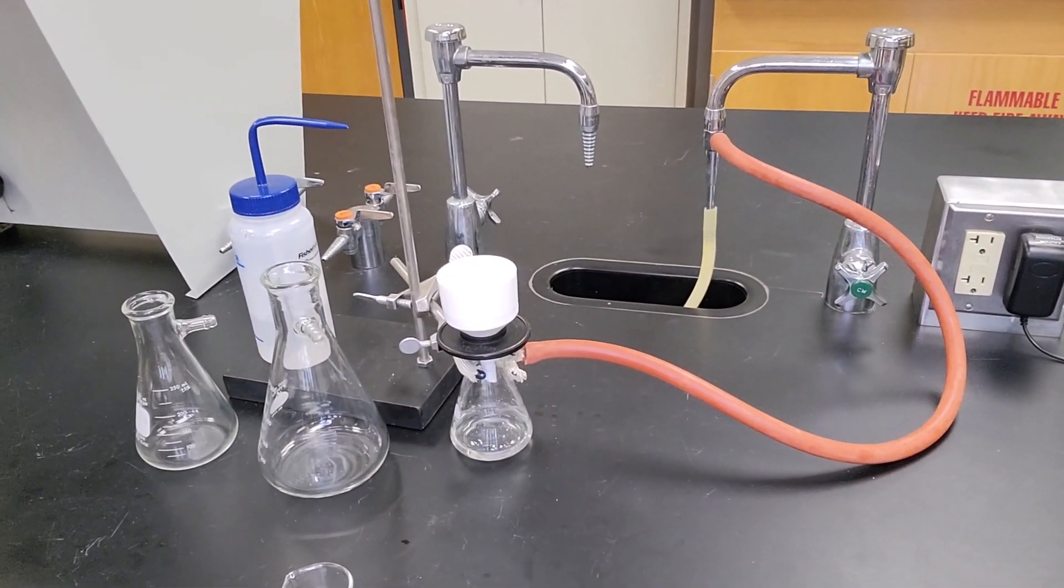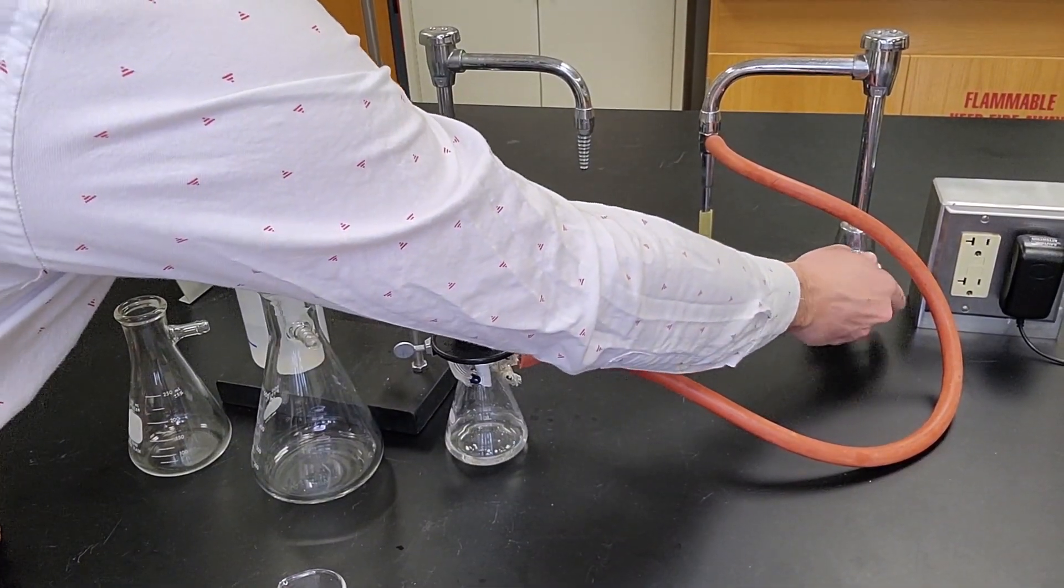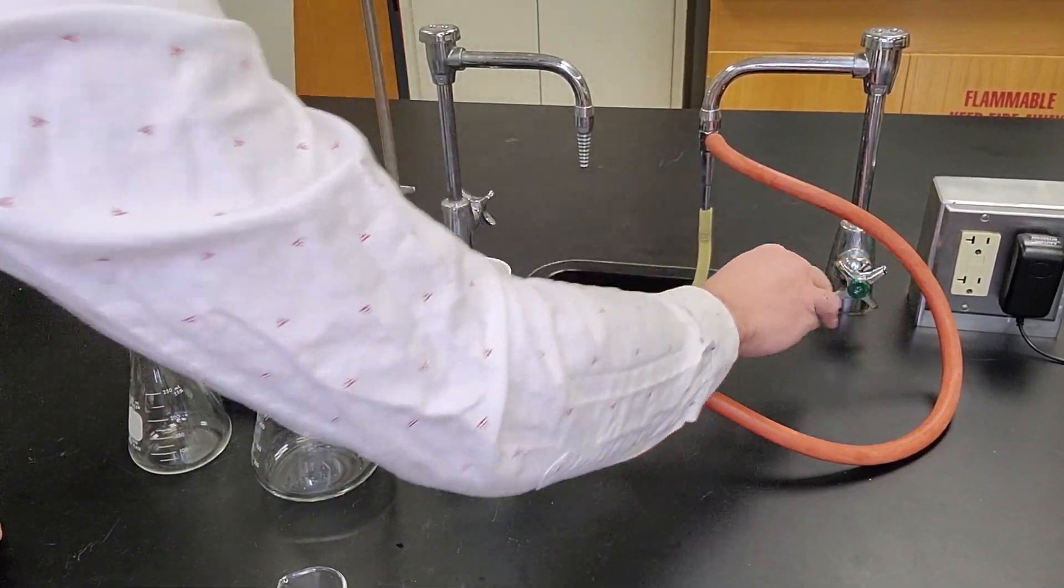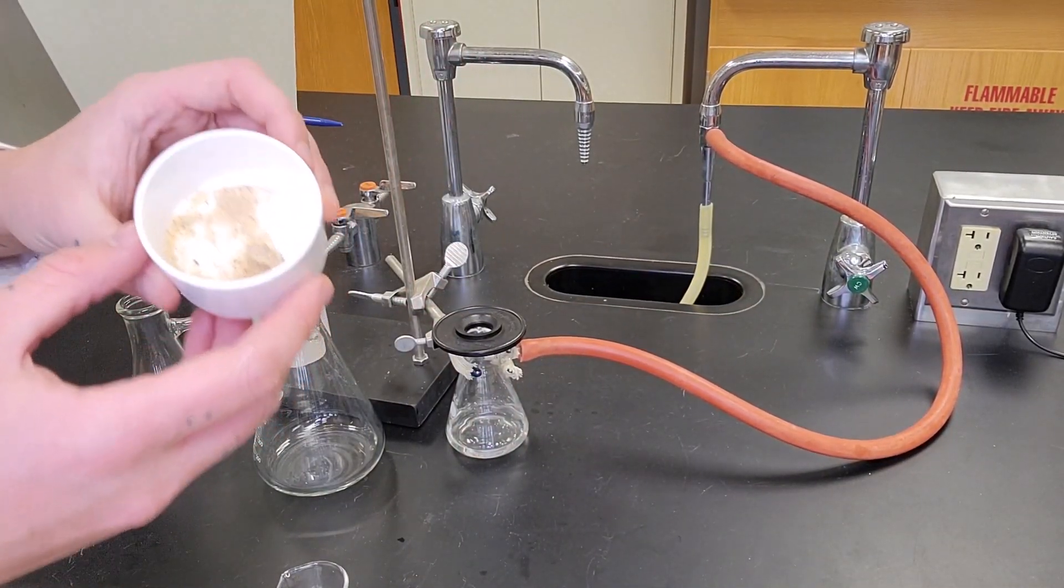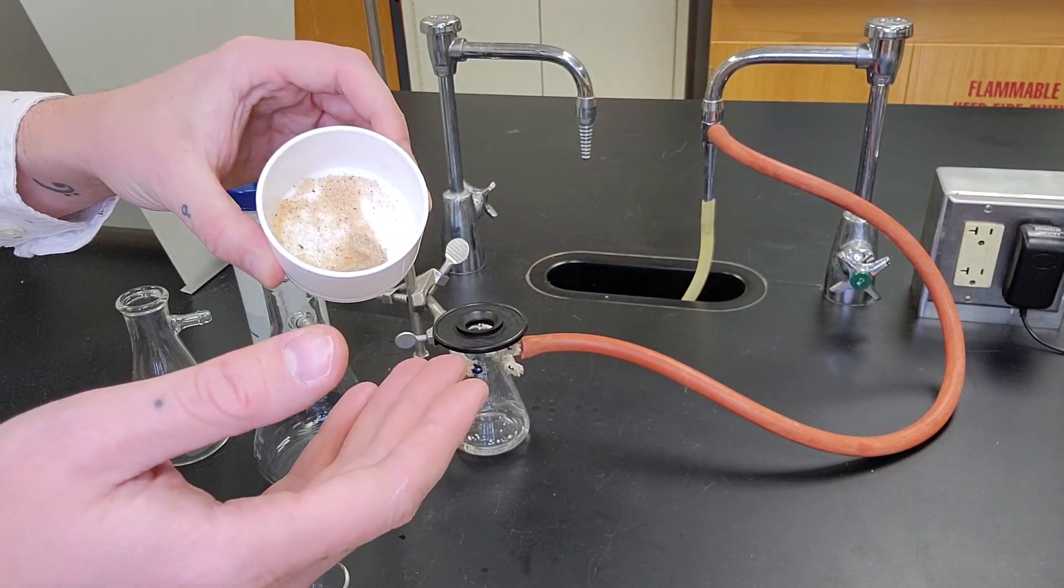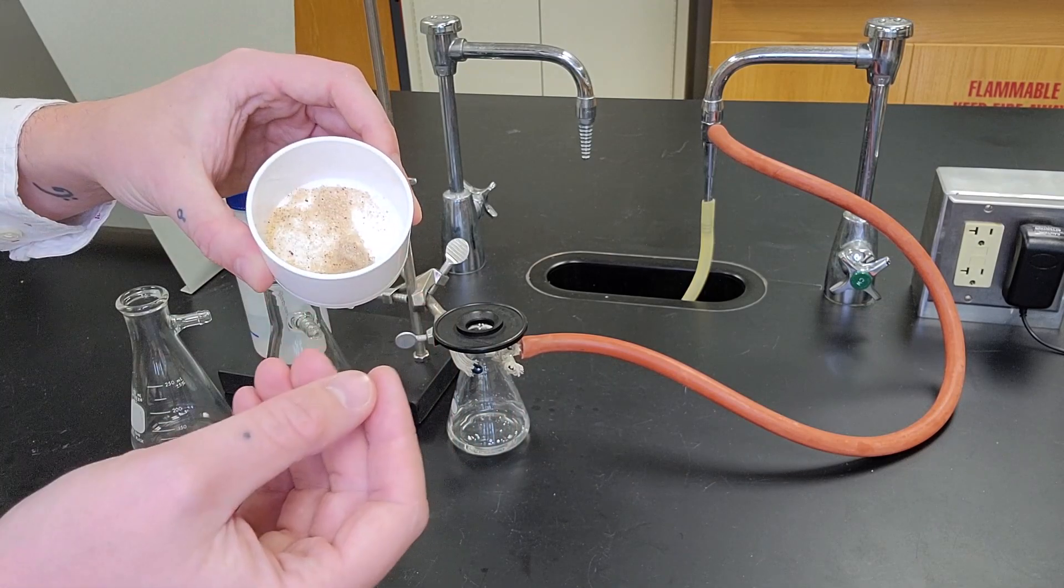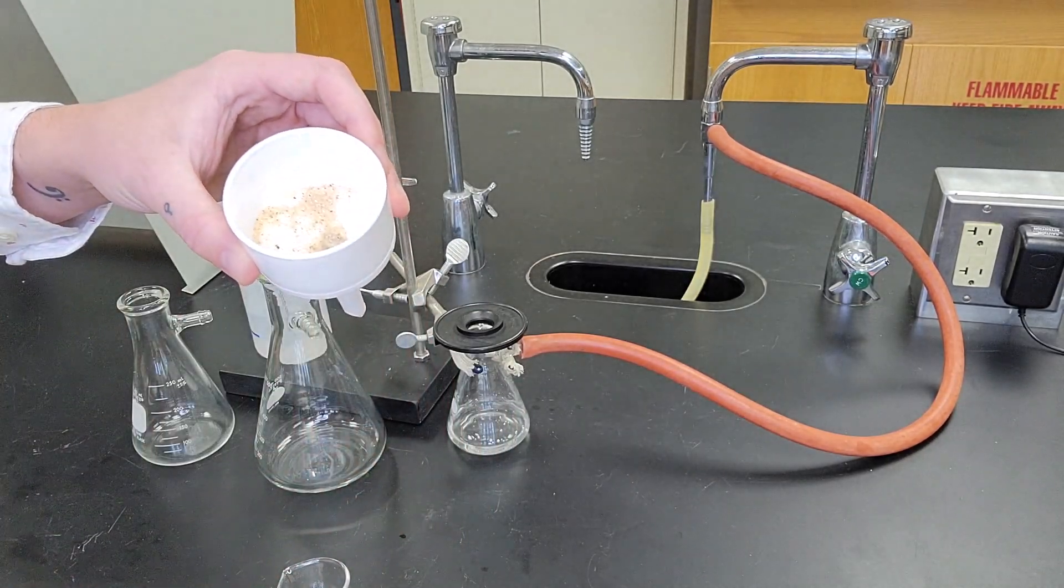And we've successfully done a vacuum filtration. At the end, I would just reach over and turn off my water, and this Buchner funnel will lift right off. So I now have dry solid that I can go on to the next step with—get a percent yield, mass it, get a melting point, whatever I need to do with the solid—I can now move on to the next step.